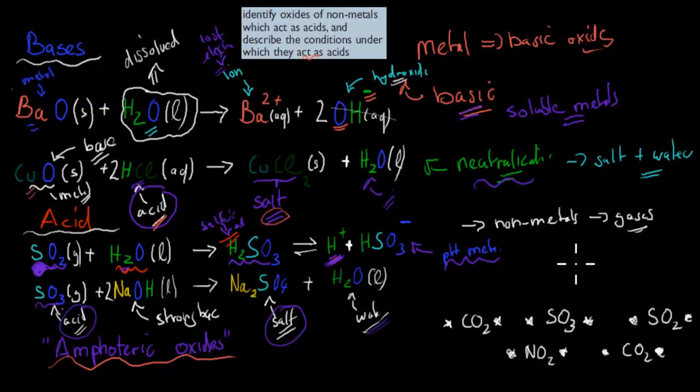Some of the ones that are important for you to remember: it says first, that was describe the conditions under which these act as acids. The next one is identify oxides of non-metals as acids. This one, sulfur trioxide here, carbon dioxide, sulfur dioxide, nitrogen dioxide.